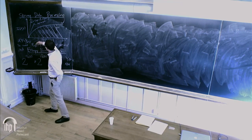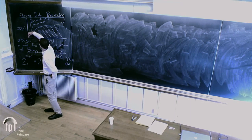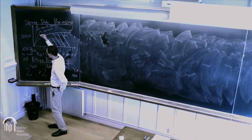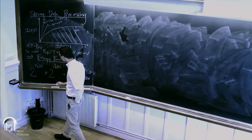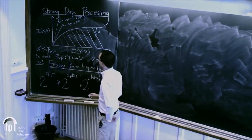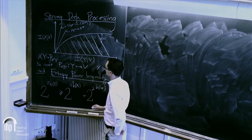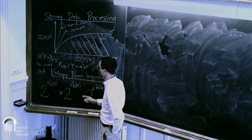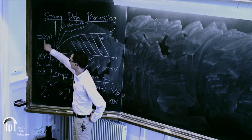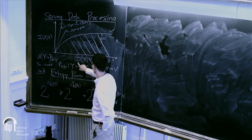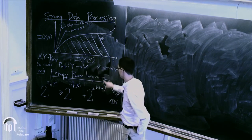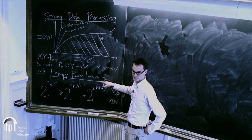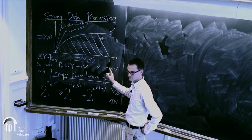Why does it lie below the line with slope equal to 1? The reason is that the traditional data processing inequality tells us that I(X;V) is less than or equal to I(Y;V) because of the Markov chain.